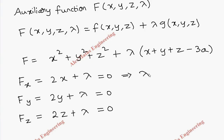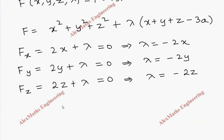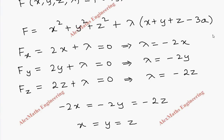From the first equation we get λ = −2x, from the second λ = −2y, and from the third λ = −2z. Equating all three: −2x = −2y = −2z. Cancelling −2 everywhere, we get x = y = z.